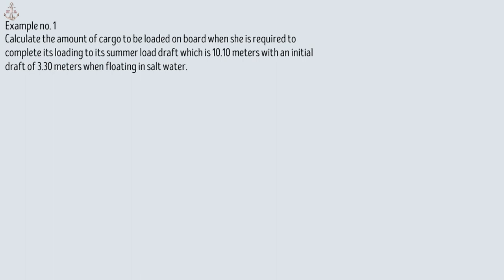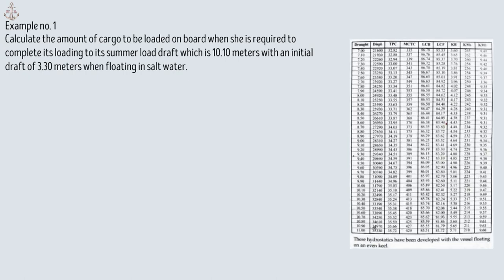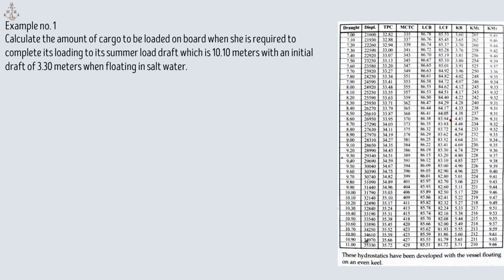I will show you two methods to find the answer to this problem. But first, we need the hydrostatic table. The data given in this table was developed when the ship is floating on an even keel, which means the ship's forward and aft drafts are the same, with zero trim. So we will assume that the vessel in this problem is floating on an even keel.